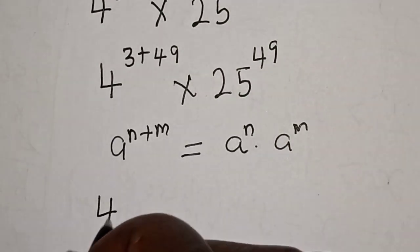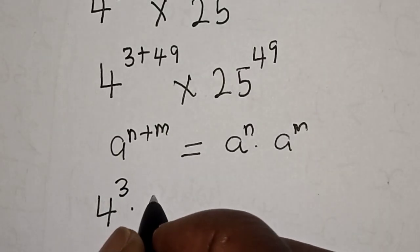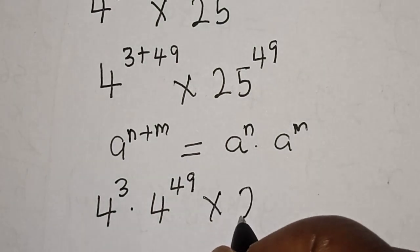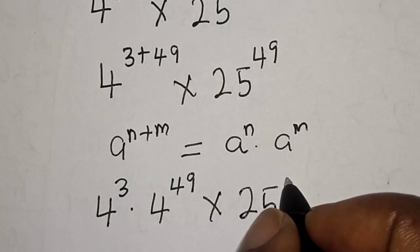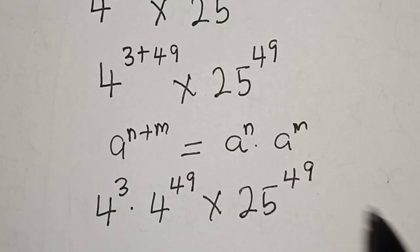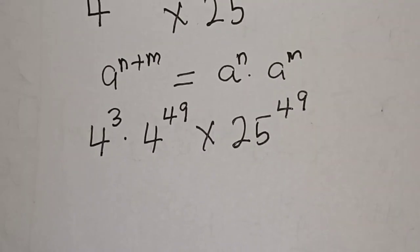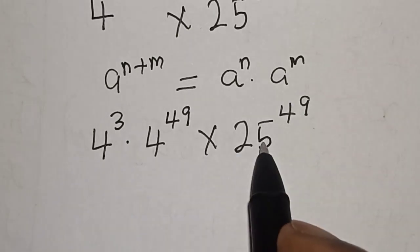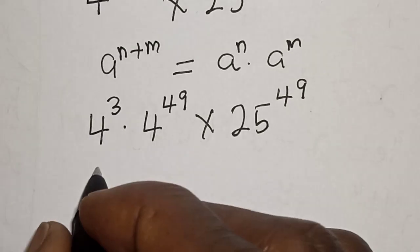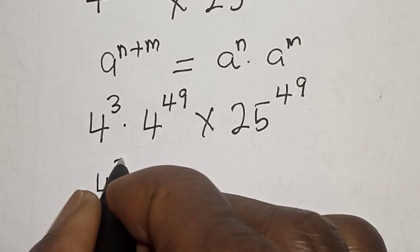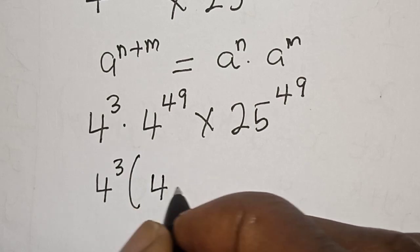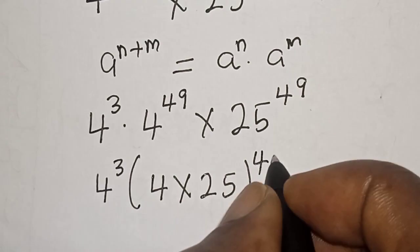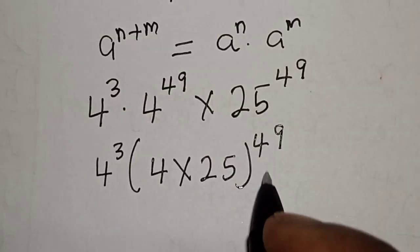Now 4 raised to power 3 multiplied by 4 raised to power 49 multiplied by 25 raised to power 49. We have 4 raised to power 49 and 25 raised to power 49 — they have the same power. So we get 4 raised to power 3, then 4 multiplied by 25 raised to power 49, because they have the same power.